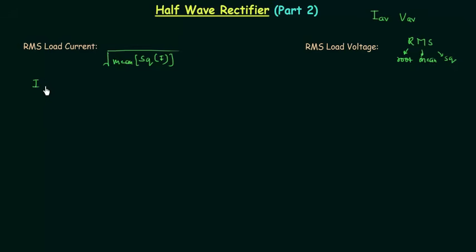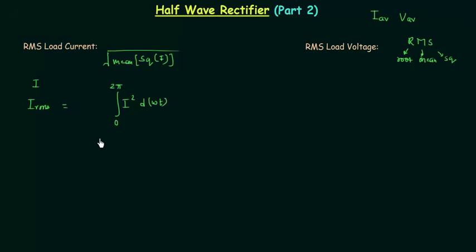Let's say the load current is I and we have to calculate I_RMS, the root mean square value of load current. It is equal to the square root of the mean of I squared. I will calculate the mean by integrating I squared from 0 to 2π with respect to ωt, divided by 2π, which gives us the factor of 1 over 2π.